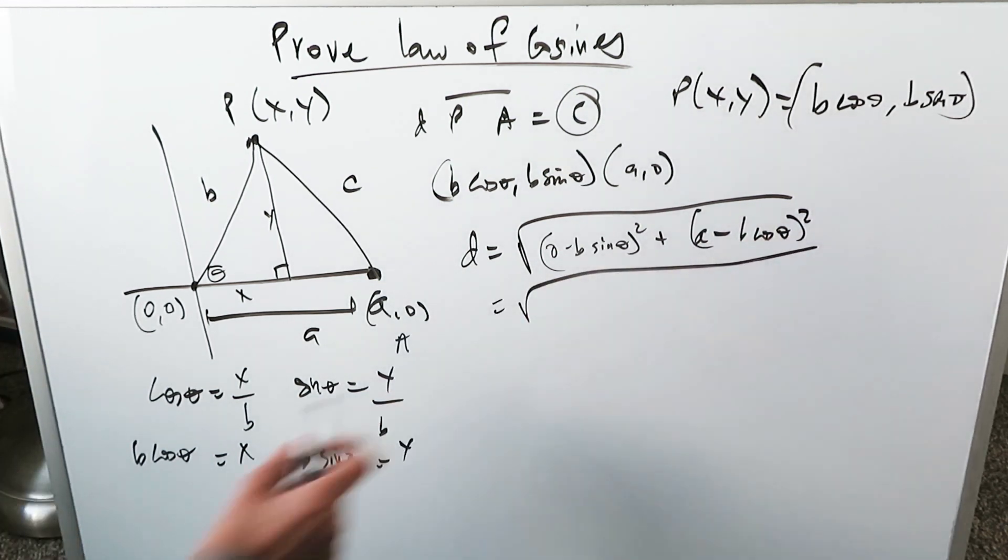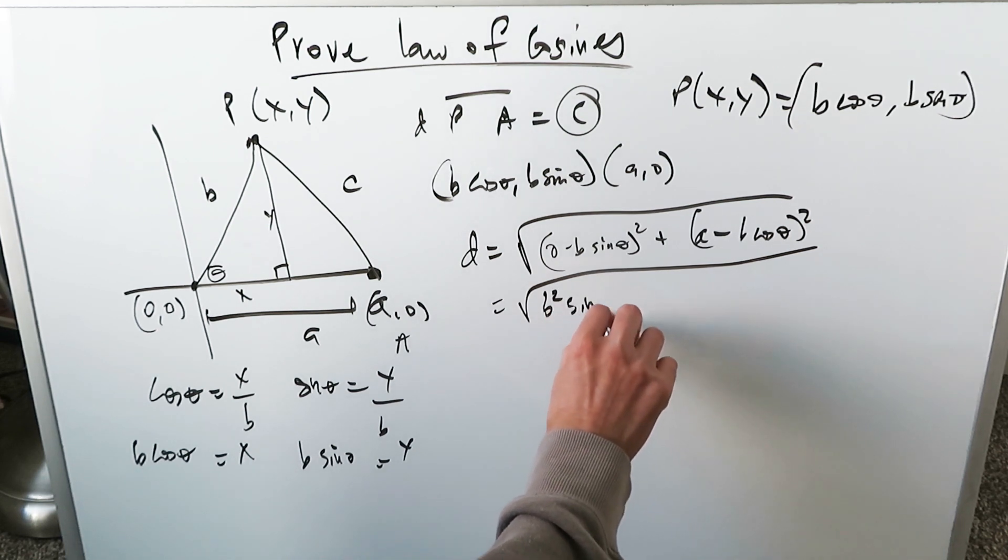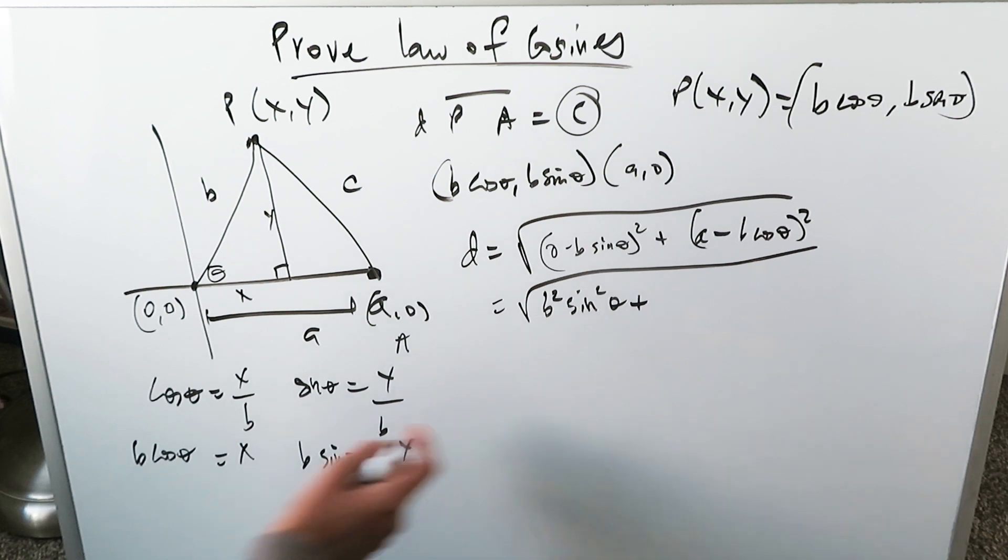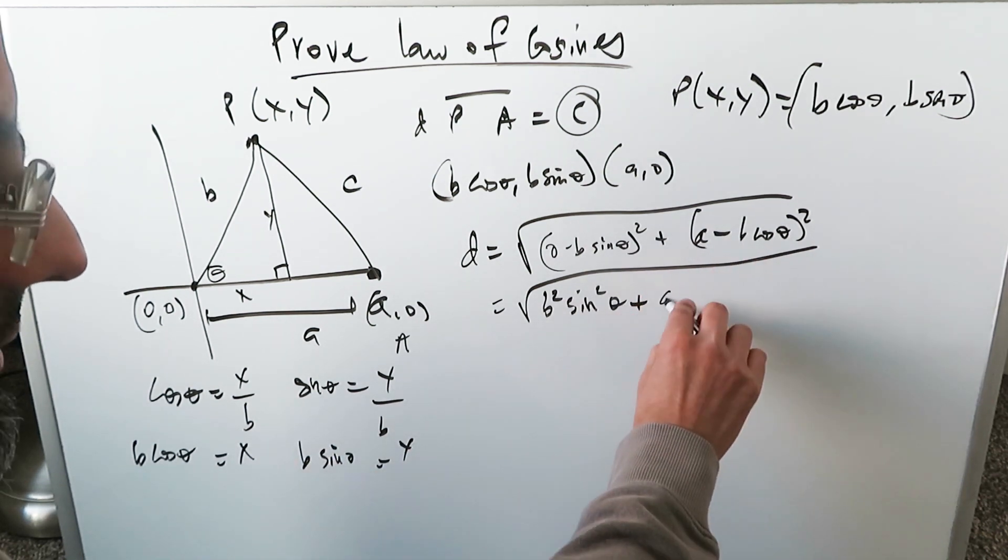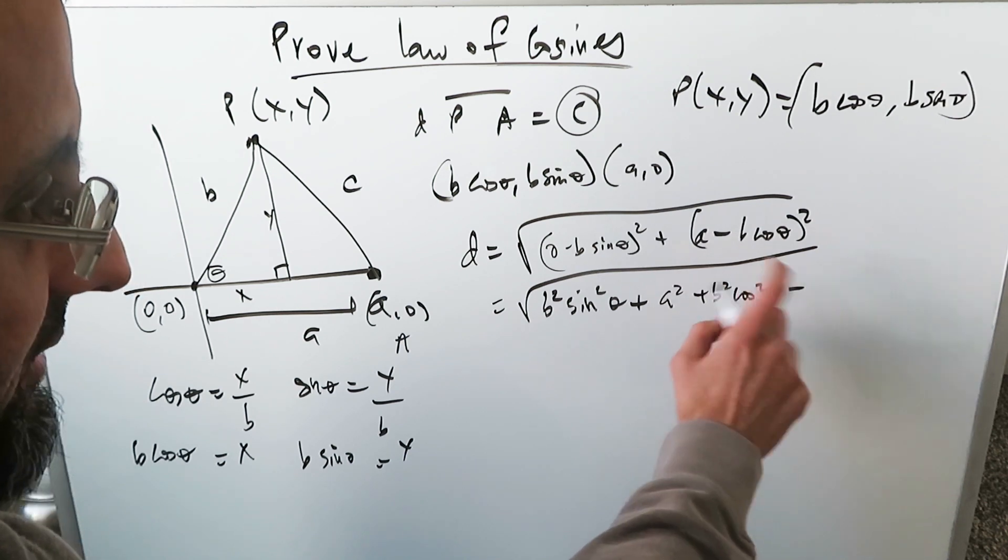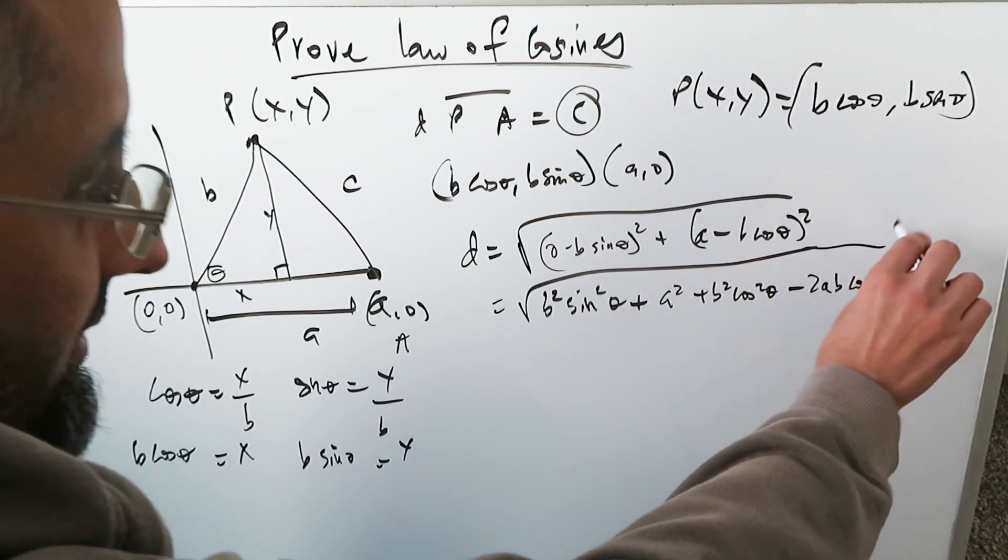Open this up. Keep everything in the root. The first part is easy. This is just b square sine squared theta. This right here is just an opening of a binomial. Not hard. You'll have a square plus b square cosine square theta minus 2ab cosine theta. All of this is still under root.